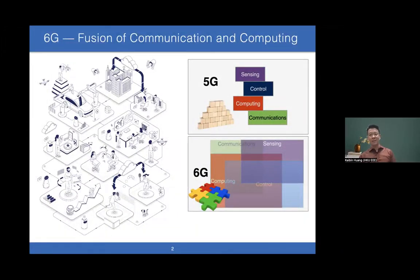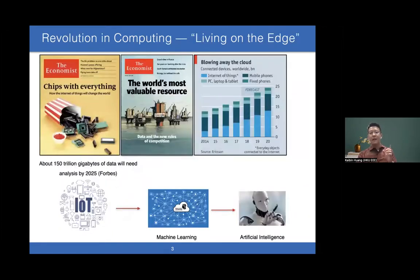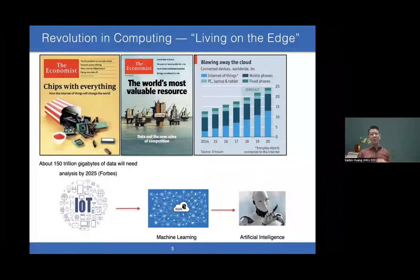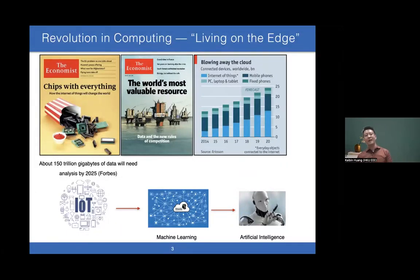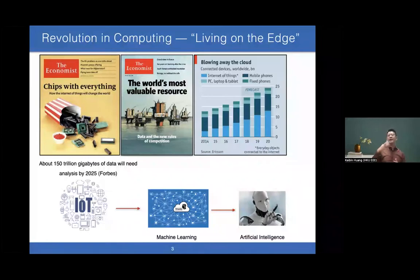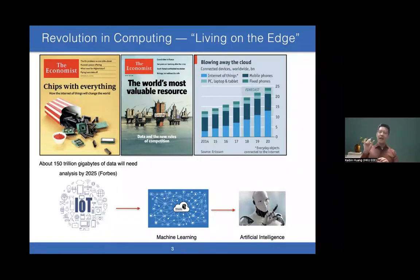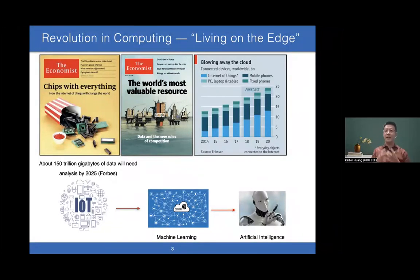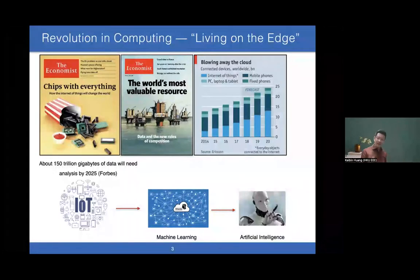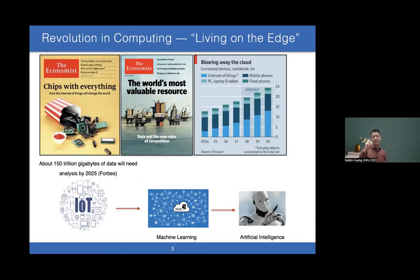In computing, we're witnessing a revolution. Ten or fifteen years ago, we talked about cloud computing at data centers. But in the past decades, computing has migrated from data centers toward the network edge, mainly for three reasons. First, microprocessors have become very cheap. Second, these devices generate enormous amounts of data.